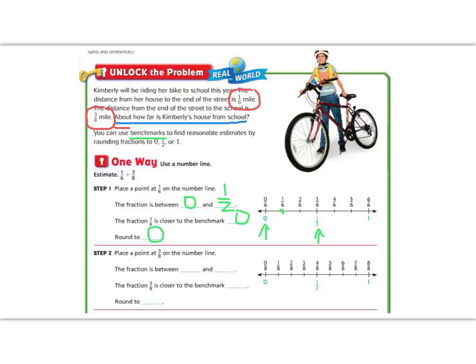Now we're going to put 3/8 on our number line and see where that is according to our benchmarks. This time our number line has been split into 8ths, and 3/8 is right here. 3/8 is also between 0 and 1/2, but you can see it's much closer to 1/2 than it is to 0, so we're going to round it to 1/2.